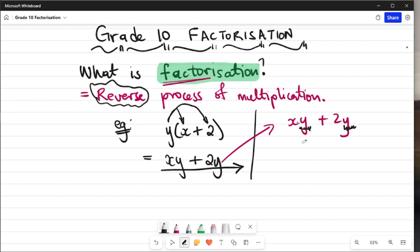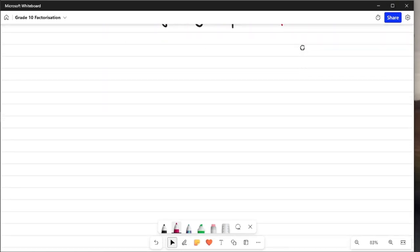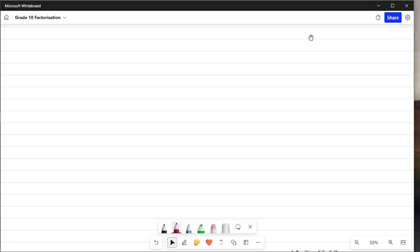So to write this as factors, you have to put y on the outside of the entire expression. Initially the expression was xy plus 2y, so we took out y. We are doing the reverse now, meaning if I take out y, I'll be left with x plus 2. Now these are factors because between y and the bracket there is a multiplication there.